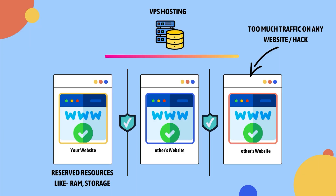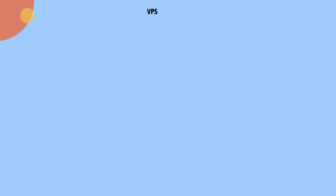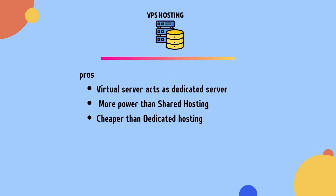For example, in VPS hosting your website is hosted on a shared server which has 10 websites, so 10% of resources will be allocated to just your website. If anything happens to another website, your website's performance will not be affected. To sum up, with VPS hosting you will have a virtual server that acts as a dedicated server within a shared environment.